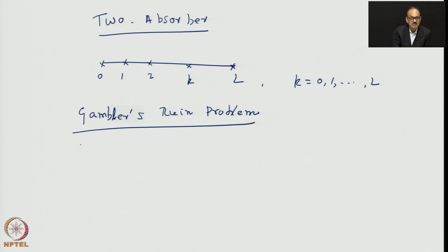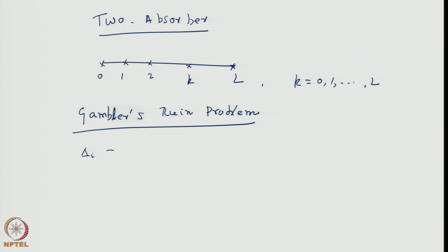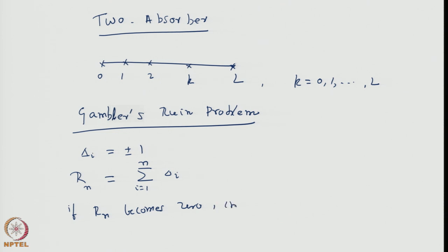In the language of random walks, the gambler is a random walker walking on the money lattice, where each jump delta_i is plus or minus 1 dollar. The quantity of interest is the total amount accumulated R_n, equal to the sum of delta_i from i=1 to n. If R_n becomes zero, the gambling stops and the gambler is ruined.